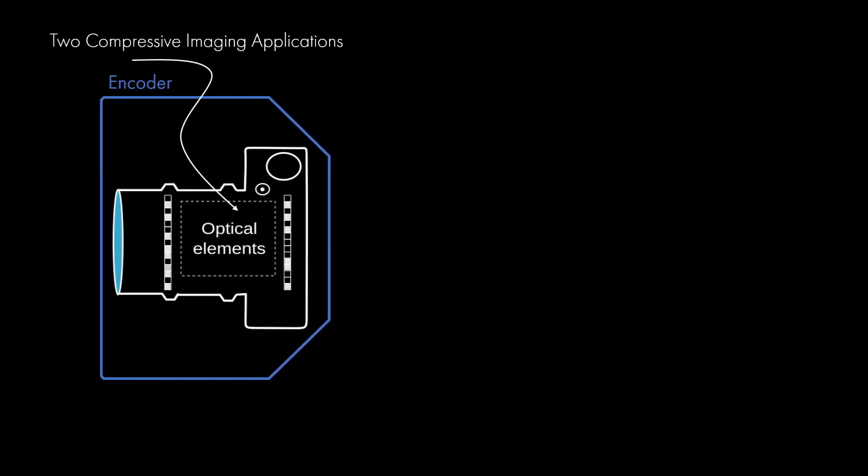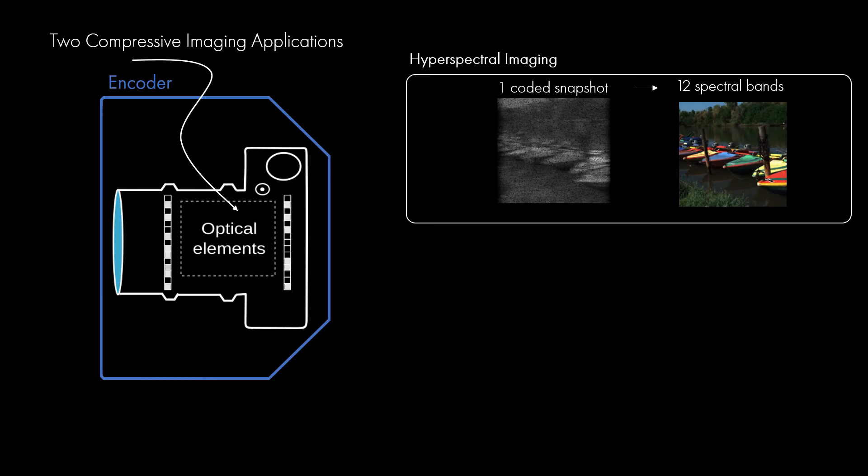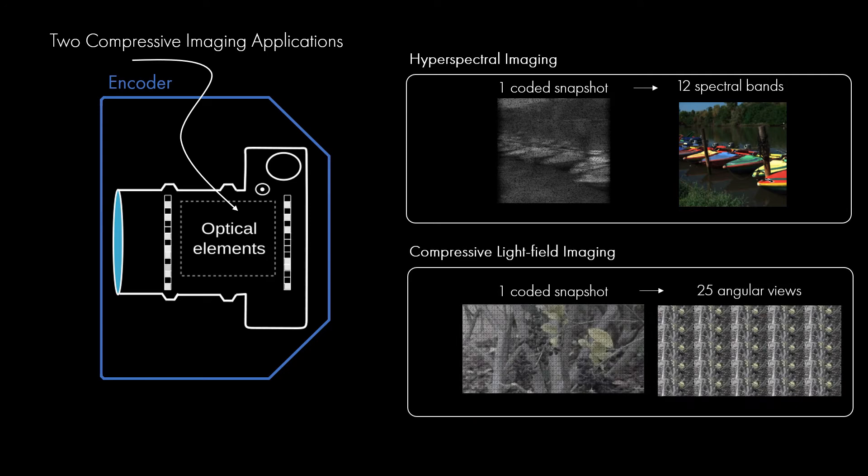TMCA is a general codification that can be used with any imaging system that contains coded apertures. Here, we focus on demonstrating TMCA for two systems, for which we adapt the optical elements of the encoder to realize two different applications. In hyperspectral imaging, we reconstruct 12 spectral bands from a single coded snapshot, while in our second application, for compressive light field imaging, we reconstruct 25 angular views from a single coded snapshot.